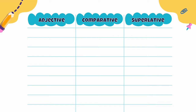Di sini ada adjective, comparative, and superlative. Last week we already learned about comparative — yang kalau komparatif itu belakangnya kita tambahkan -er, kalau superlative belakangnya kita tambahkan -est. Contoh: smart — pintar, komparatifnya smarter, superlative-nya smartest. Bedanya: smart artinya pintar, smarter lebih pintar, smartest paling pintar.